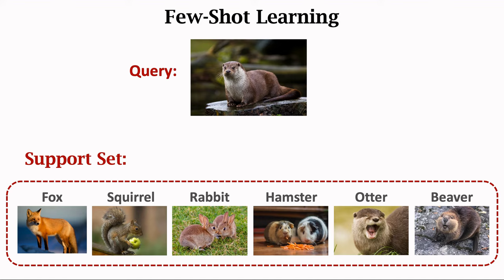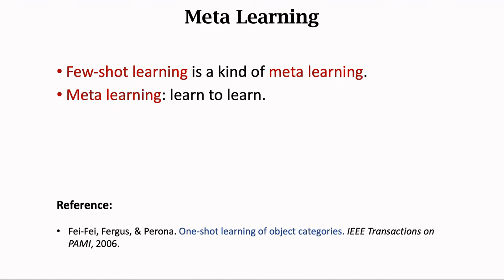I am going to explain what few-shot learning and meta-learning are. You may have heard of meta-learning. Few-shot learning is a kind of meta-learning. Meta-learning is different from traditional supervised learning. Traditional supervised learning asks the model to recognize the training data and then generalize to unseen test data. Differently, meta-learning's goal is learn-to-learn. How do we understand learn-to-learn?